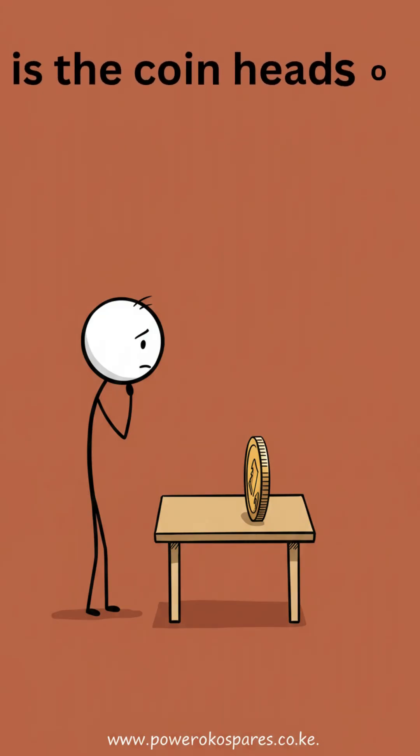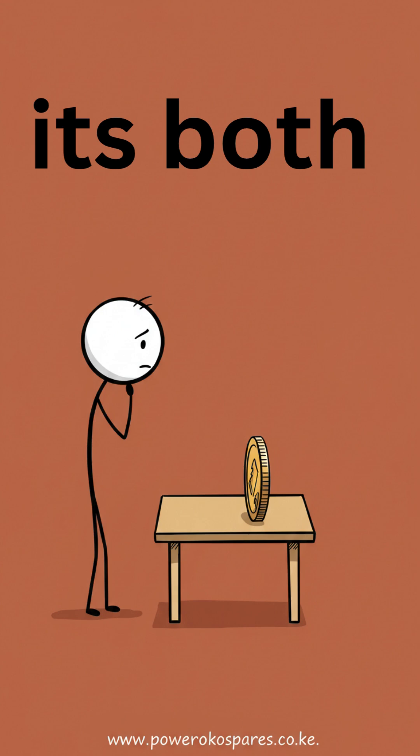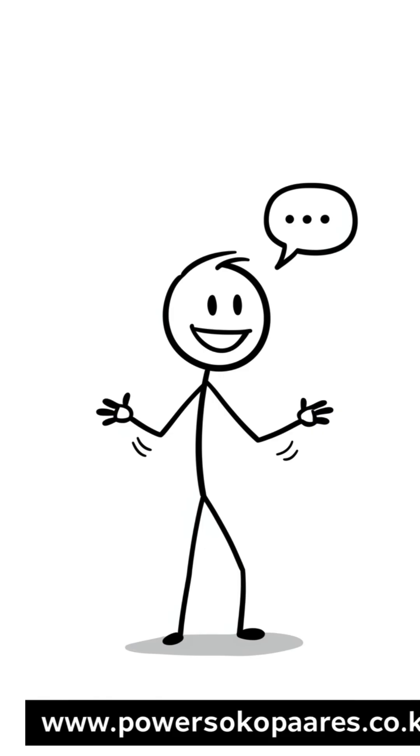Like this case of the coin. Is the coin heads or tails? It's both, and this is what is called superposition, a state where you are both.